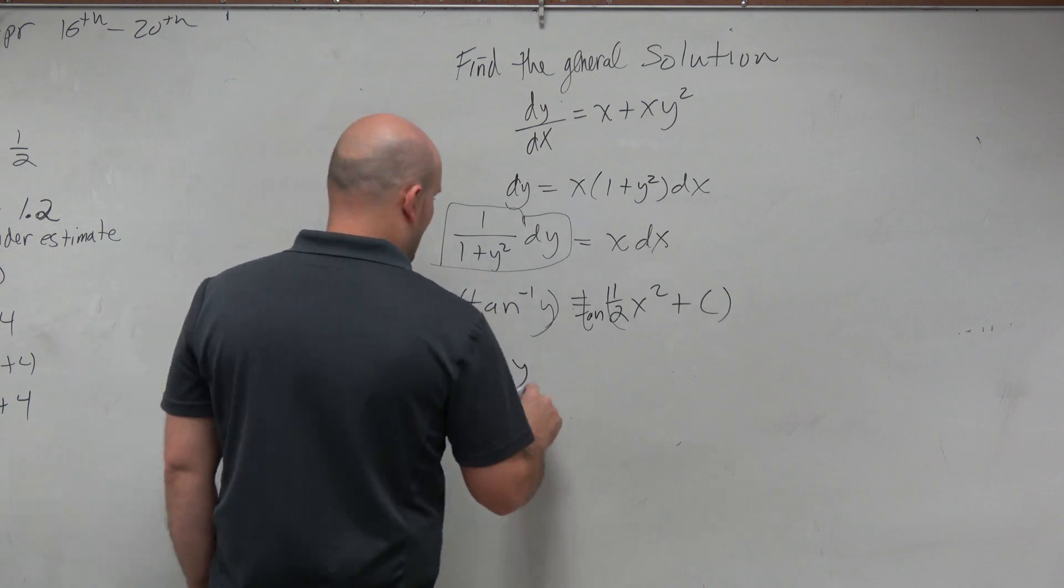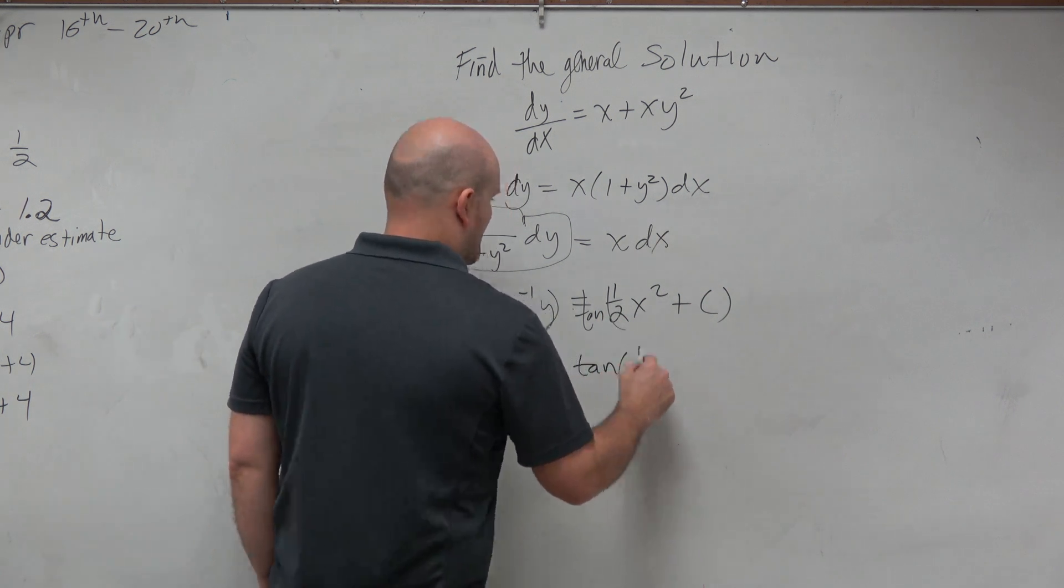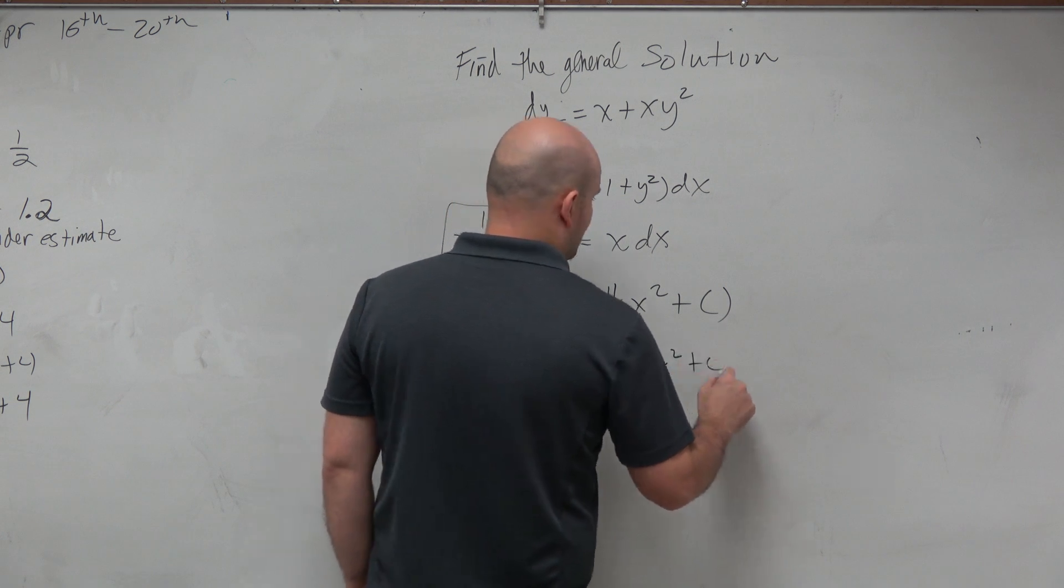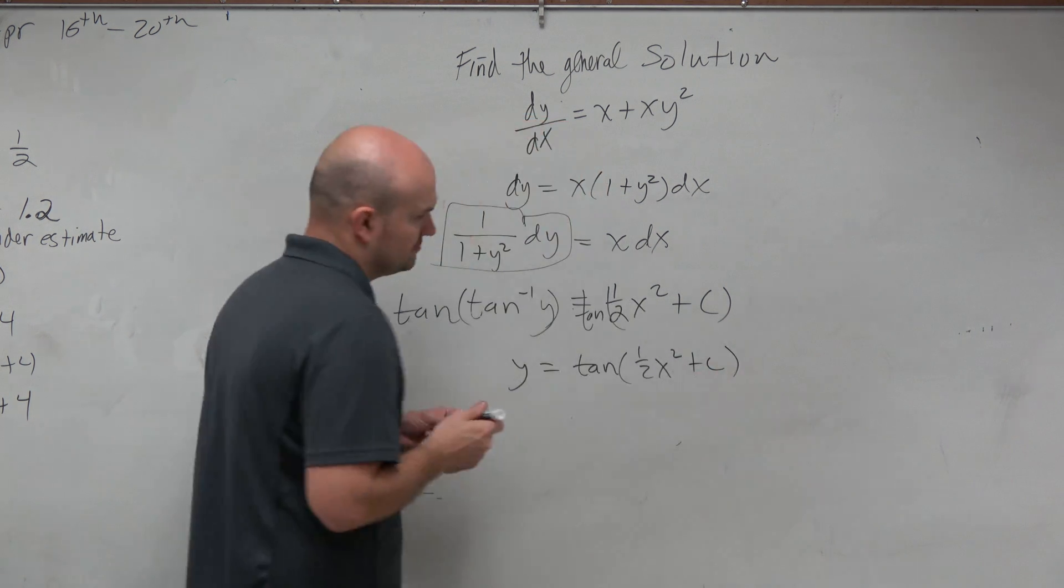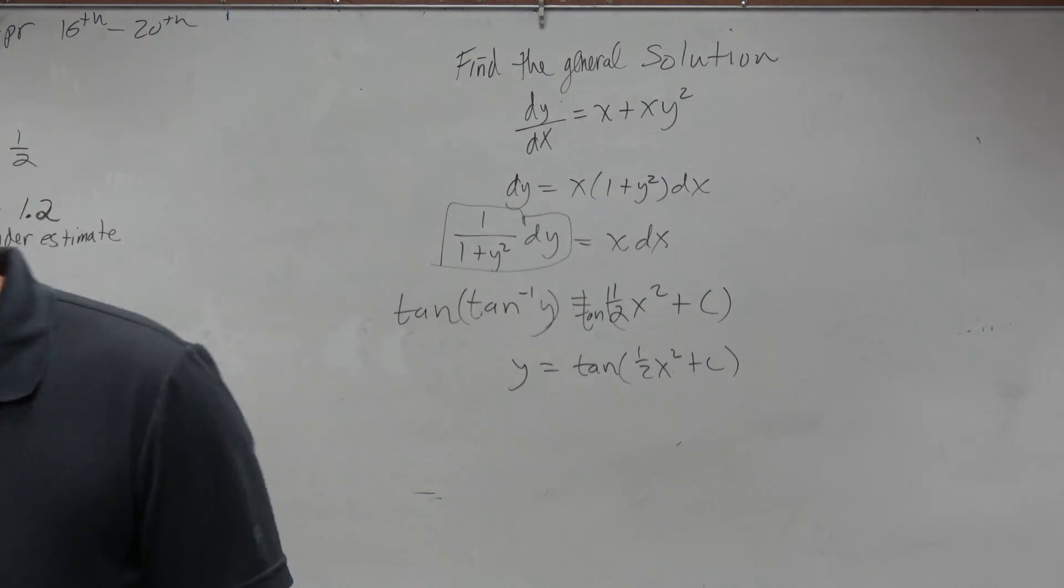So therefore, you get y equals the tangent of 1 half x squared plus c. There you go. Good job.